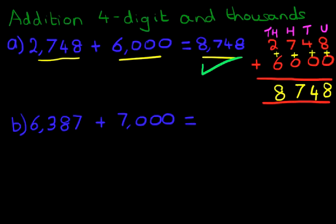6,387 plus 7,000. And again, we're going to do this using the vertical format. So let's rewrite this question in columns.